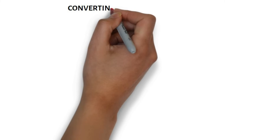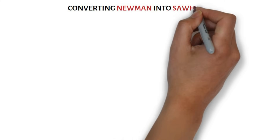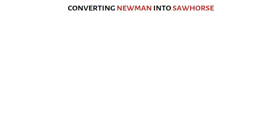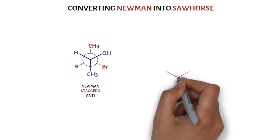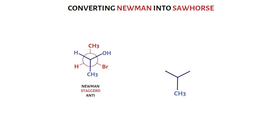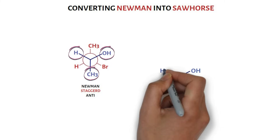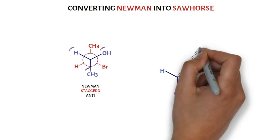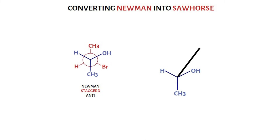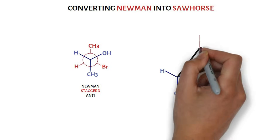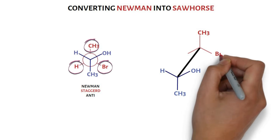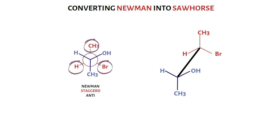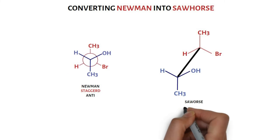Let us discuss the conversion of Newman projection into sawhorse projection. Consider this staggered Newman projection. To convert into sawhorse, write the front carbon and its groups without any change in position. Then replace the circle with a line or bond connected to the front carbon at one end. At the other end of the bond, the back carbon and its groups are written without any change in position. This gives us the staggered sawhorse projection.